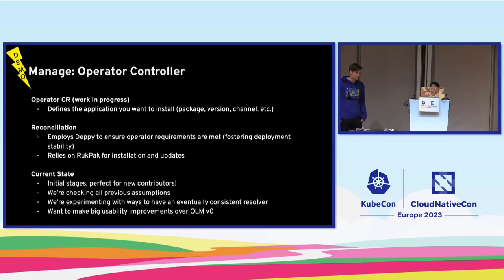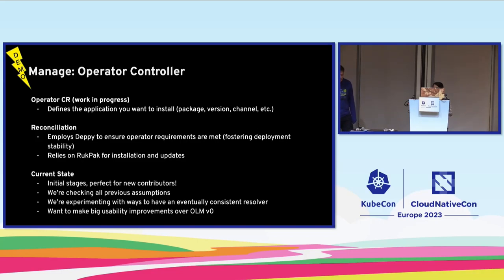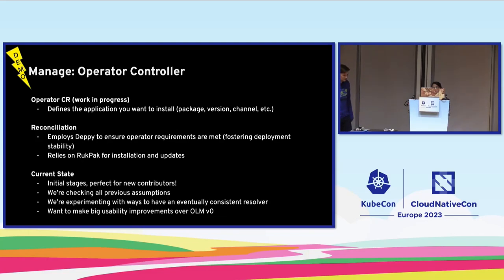The fourth part is the Operator Controller, which is the user-facing API. It's as simple as creating a CR where you define the package name, the version, and the channel — though this is still in progress. When the Operator CR is created, the reconciler for the Operator Controller kicks in: it resolves dependencies using Deppi, gets the bundle contents from Catalog D, and installs the contents on the cluster using Rugpack. That's how the whole system works together.